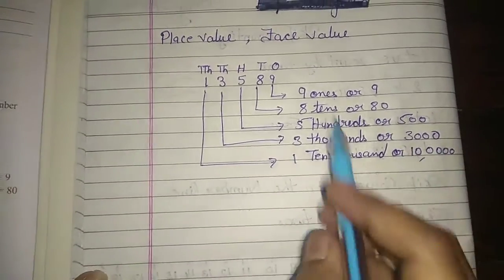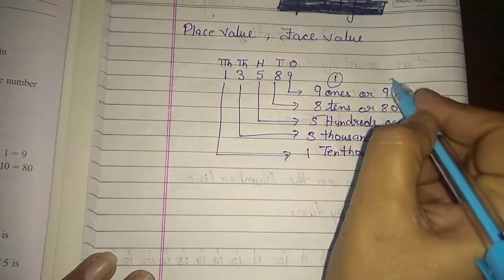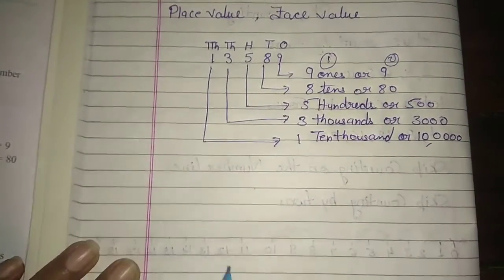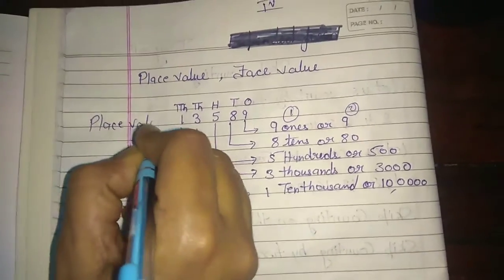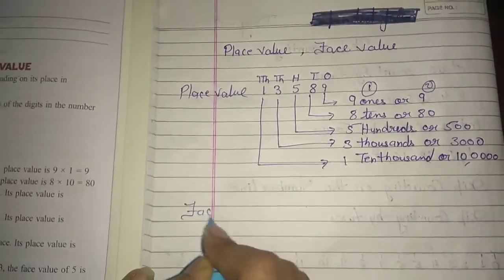What will be your place value? You can write two patterns. First this and second this one. Now, we call the face value. So, this is our place value and this is our face value.